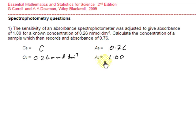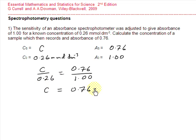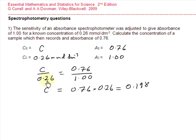We now have the variables to substitute into our proportionality equation. Taking the ratio of the concentrations, C divided by 0.26 will equal the ratio of the absorbances, 0.76 divided by 1. Rearranging, C equals 0.76 divided by 1, which is 0.76, multiplied by 0.26, giving a value for the unknown concentration of 0.198 millimoles per decimetre cubed.